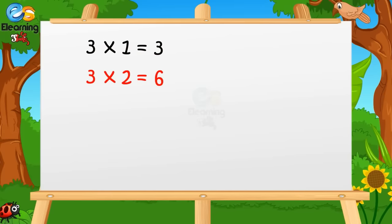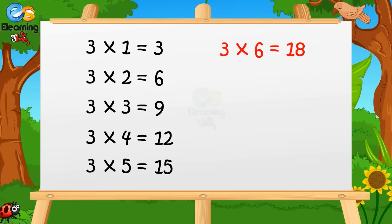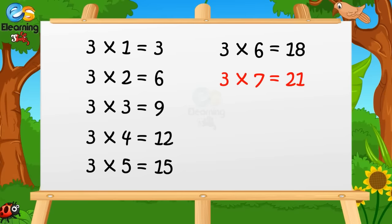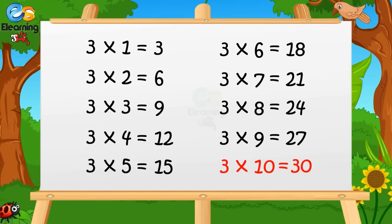3 ones are 3. 3 twos are 6. 3 threes are 9. 3 fours are 12. 3 fives are 15. 3 sixes are 18. 3 sevens are 21. 3 eights are 24. 3 nines are 27. 3 tens are 30.